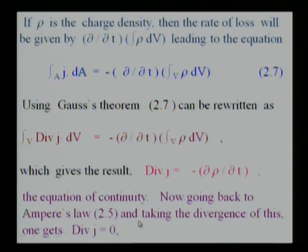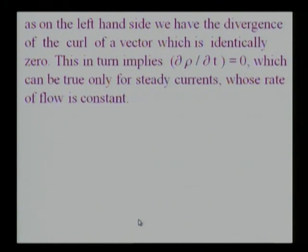Going back to Ampere's law and taking the divergence, one gets divergence of J equal to zero, as on the left-hand side we have the divergence of the curl of a vector, which is identically zero. This in turn implies delta rho by delta T equals zero, which can be true only for steady currents whose rate of flow is constant.